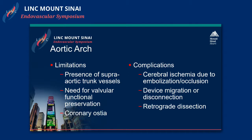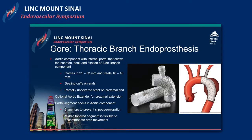In terms of the aortic arch, there are definitely limitations. The innominate and carotid pose challenges. There's still a reasonable amount of stroke, and you still need to preserve valvular function and flow to the coronaries. Device migration under those forces in the proximal aorta is significant, and retrograde dissection is still a major concern. So these are some of the challenges that we're dealing with.